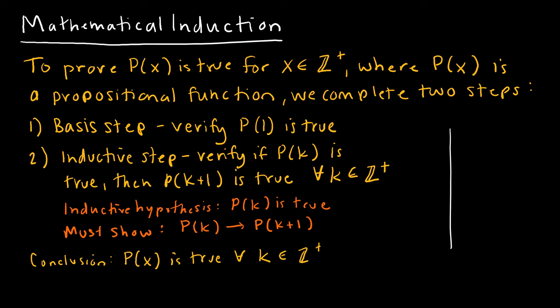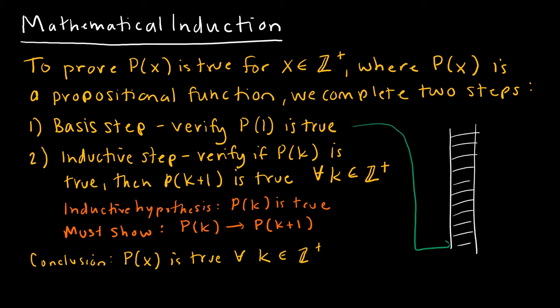Mathematical induction is like a ladder with an infinite number of rungs. The thought process is that if I can prove that I can get to the first step of my ladder, and then I can prove that if I can get to any rung of the ladder, including the first, then I can get to the next rung, and that to the next rung — then I can get to any rung of the ladder that I want. It's true for all rungs of the ladder.